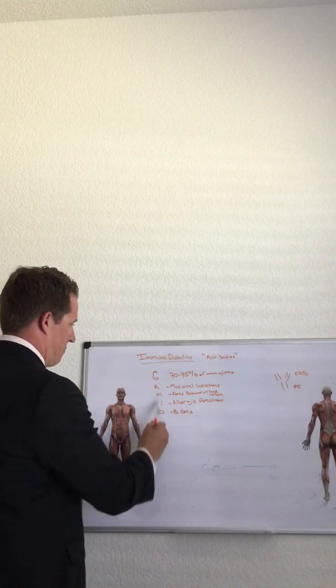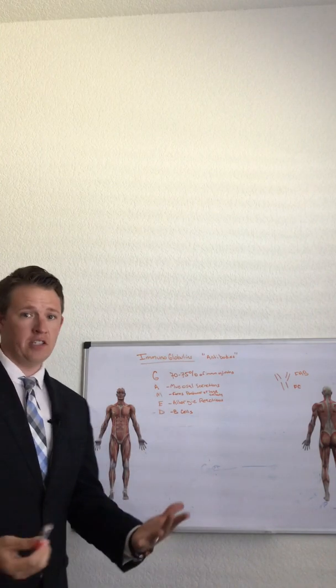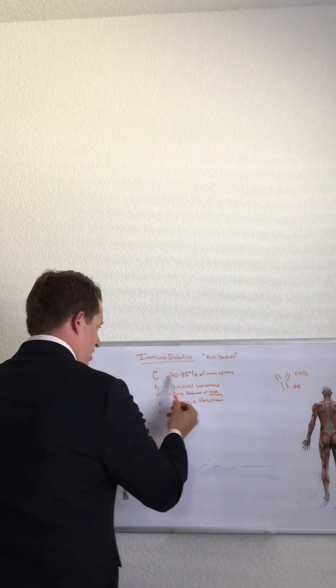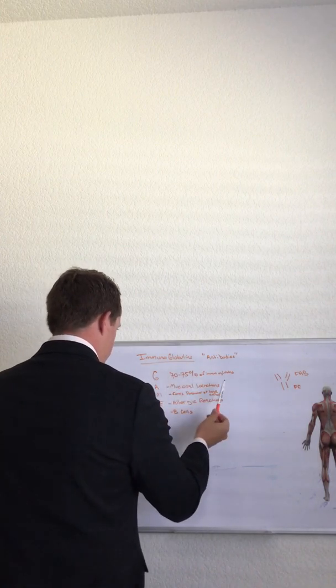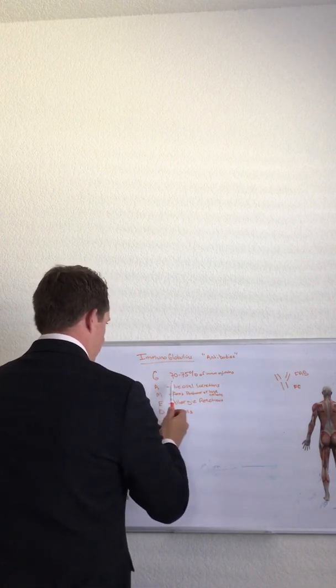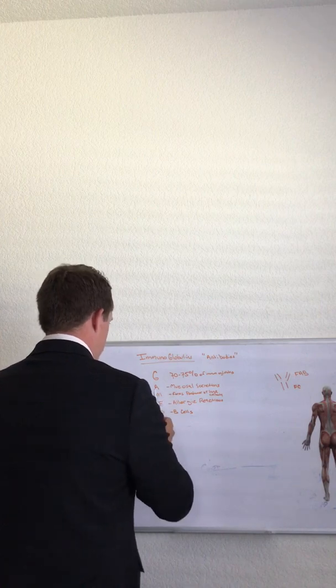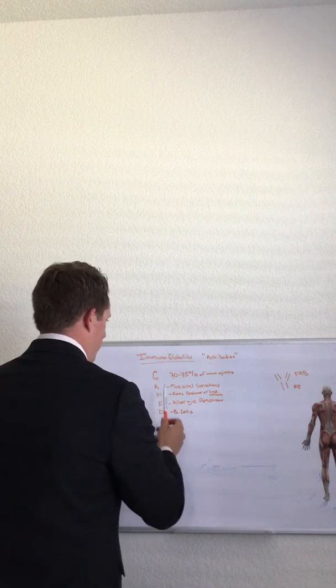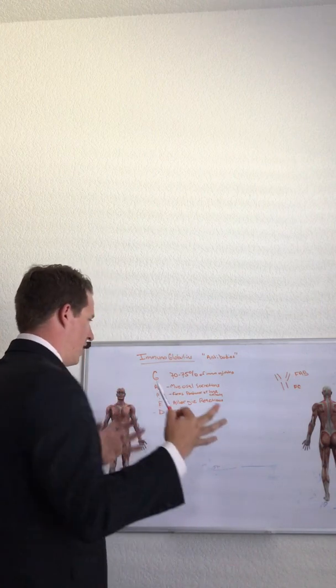I like to use the acronym GAMED because it's easier to remember. So IgG, 70-75% of immunoglobulins are in our bodies. IgA, usually found in mucosal secretions. IgM, they can form pentamers or create a large antibody complex.